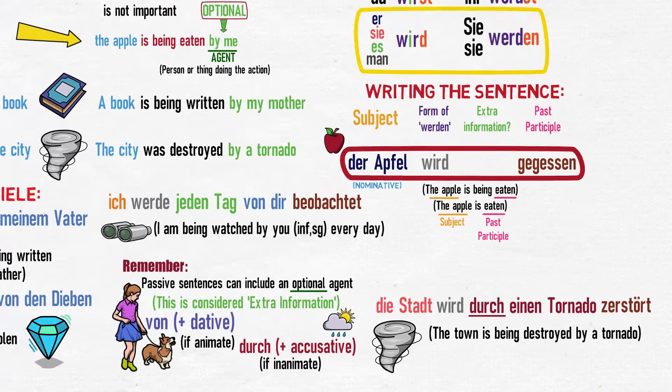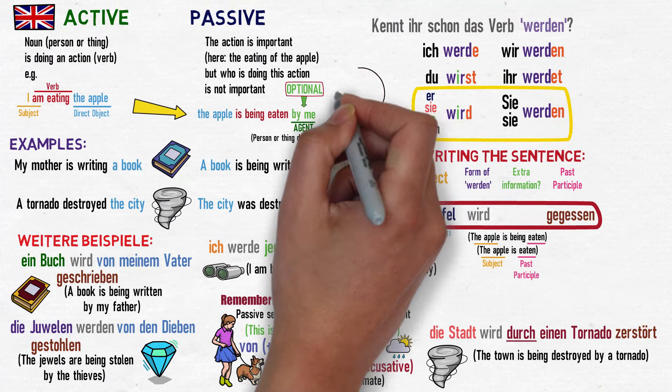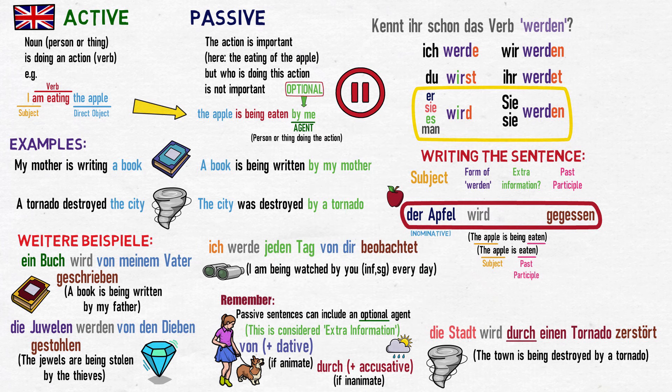So that's how to use the passive voice in the present tense. It's a good idea to pause the video now to recap the conjugations of werden in the present tense and how to structure a passive sentence by using the following word order: Subject — form of werden — extra information — past participle.